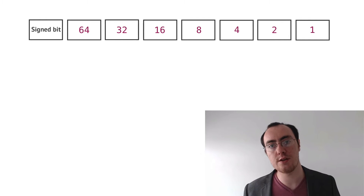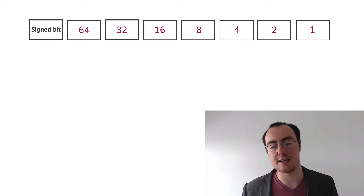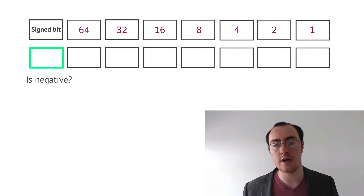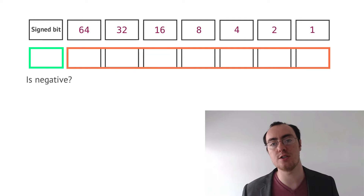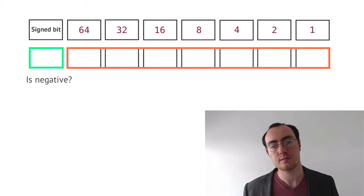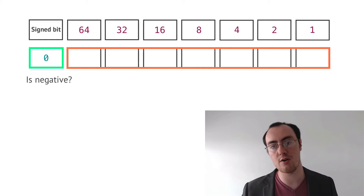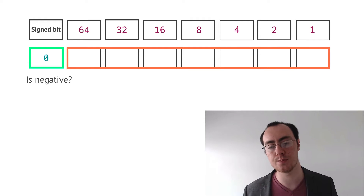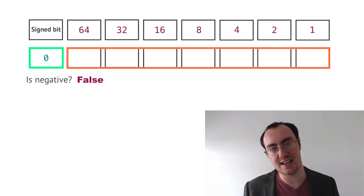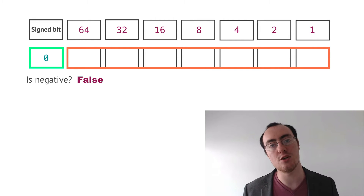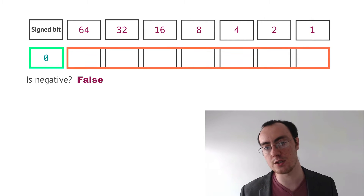The signed bit tells us whether we have a positive or a negative number. You can think of this signed bit as asking a question: "Is negative?" It wants to know if what's to the right of it is going to be negative or positive. If it's 0 — which is the same as false in computing, where 0 equals false and 1 equals true — then it means "is negative: false." It's not negative; whatever number is on the right-hand side is going to be a positive number.